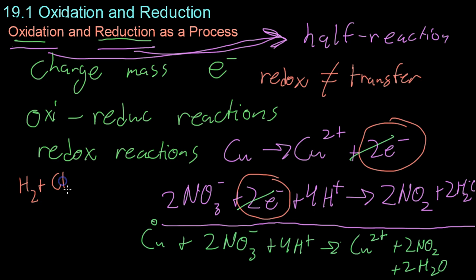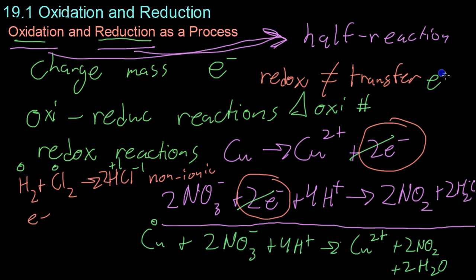For example, if you have hydrogen and chlorine reacting to form hydrogen chloride, because this is non-ionic, that is, this is a polar covalent bond, the chlorine doesn't completely take away the electrons from the hydrogen. However, they do still change oxidation numbers. They're both zero here because they're in their elemental form, but then the chlorine takes on an oxidation number of negative one and hydrogen takes on an oxidation number of positive one. So these redox reactions just indicate a change in oxidation number, not necessarily a transfer of electrons.